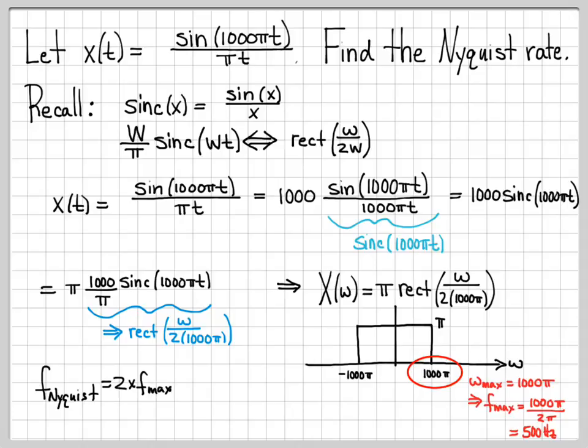So now we can use our Nyquist sampling theory. It's very simple. The Nyquist frequency is just two times the maximal frequency. So two times f max is two times 500, which is 1,000 hertz. So we have solved for the Nyquist rate of this signal.